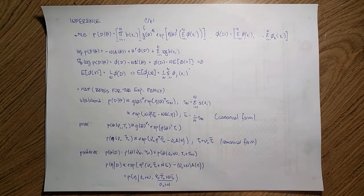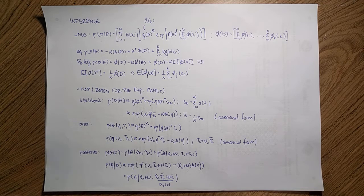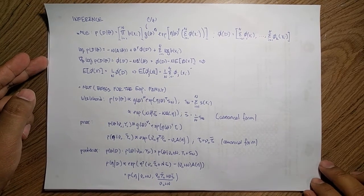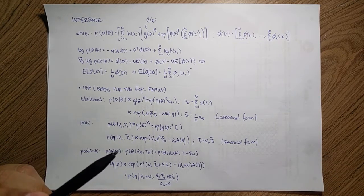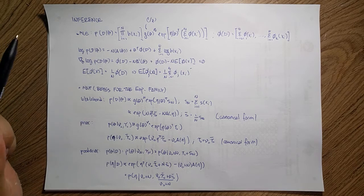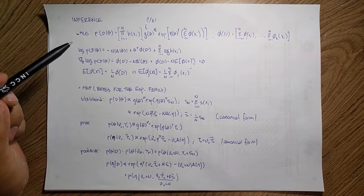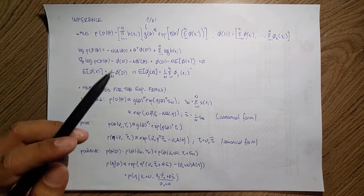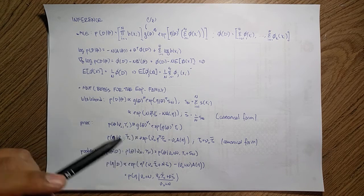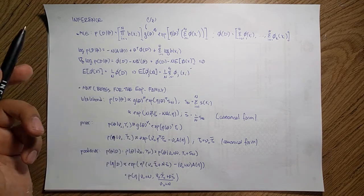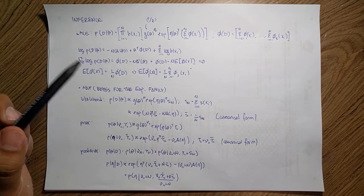Okay folks, welcome back. This is session 6 on the exponential family and we're going to continue with the inference part — that is, how we go from the data to the models. Everything is already written because I forgot to check the battery of the camera and it died on the first round, so I'm just going to explain everything. This is actually a nice experiment, so just let me know if you prefer this format.